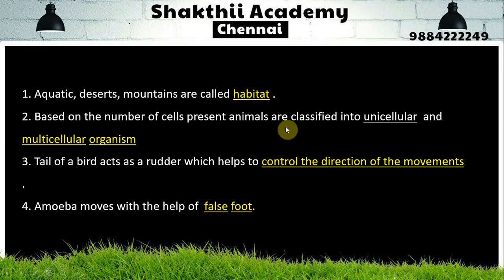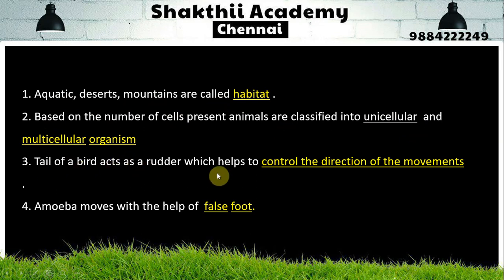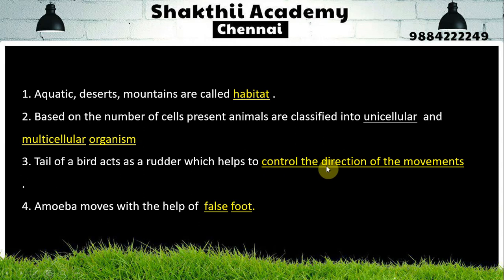Based on the number of cells present, animals are classified into unicellular and multicellular. The tail of a bird acts as a rudder, which helps to control the direction of their movement. Amoeba moves with the help of false feet (pseudopodia).